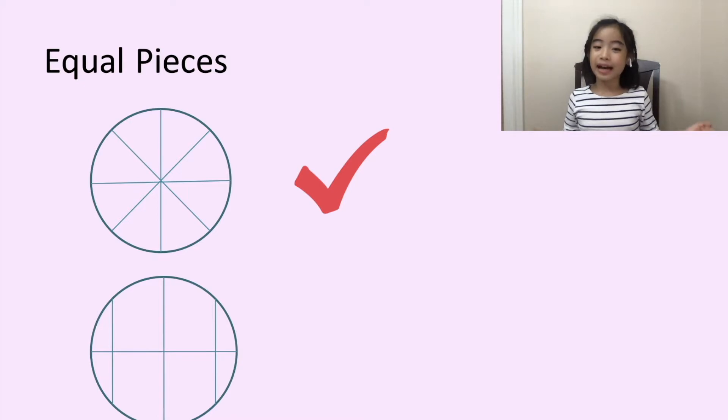Now, let's look at the second example. We see that the pieces at the side of the circle are smaller than the pieces in the middle of the circle. So, let's call this incorrect because it's not divided into equal pieces.